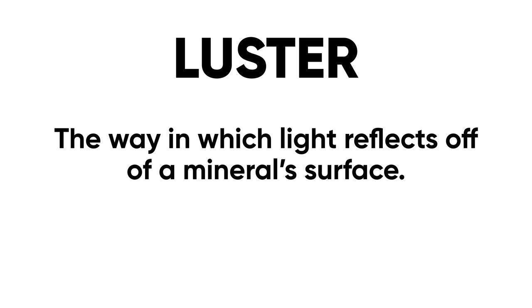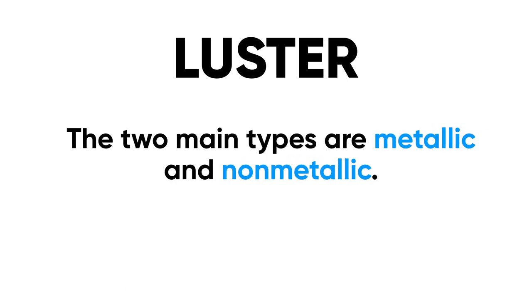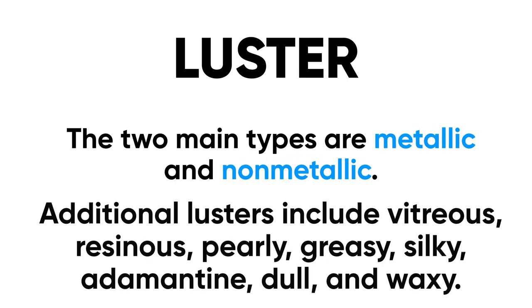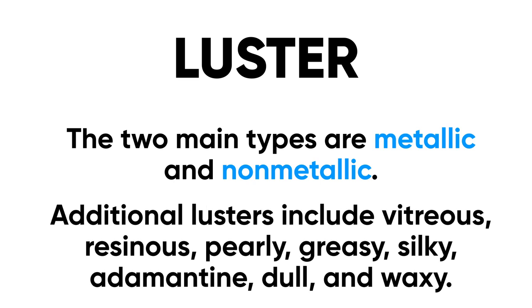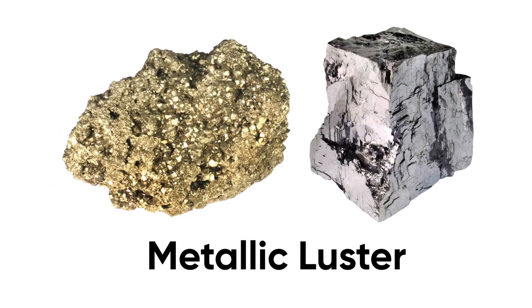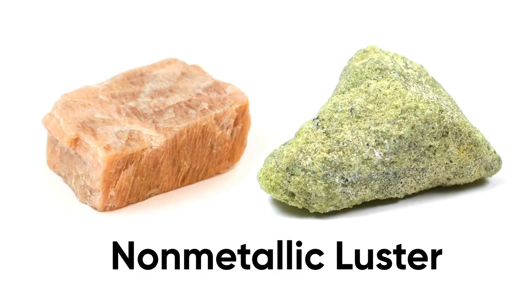So let's look at luster — the way in which light reflects off of the surface of the mineral. There are two main types: metallic and non-metallic. There are also some additional types of luster you may come across, things like vitreous, pearly, silky, waxy, etc. Metallic minerals actually look like chunks of metal — gold, brassy, silver colors, very reflective with light sparkling off the surface. This is as opposed to non-metallic minerals, like potassium feldspar and olivine, which look more dull and less like metals.